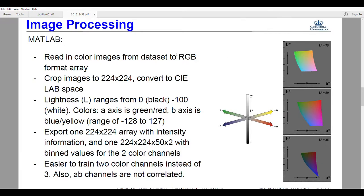In MATLAB, we transform the image from RGB — three color channels — into Lab space, which has L for lightness (basically the intensity), and A and B, which are the two color channels.